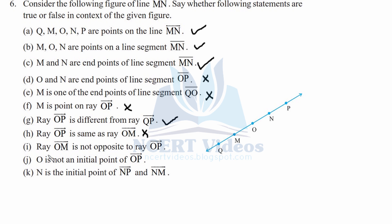Part i: ray OM is not opposite to ray OP — false, they are opposite rays, so the statement is incorrect. Part j: O is not an initial point of ray OP — false, O is indeed the initial point of ray OP. Part k: N is the initial point of rays NP and NM — true, because both rays start from N, making N the initial point in both cases. This completes question number six.